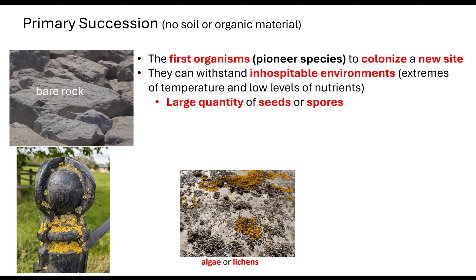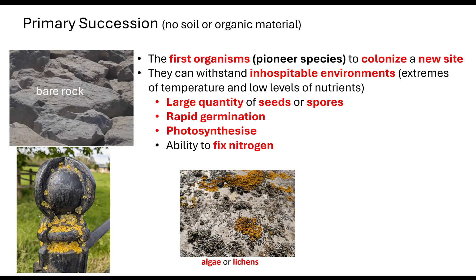If those seeds or spores are blown onto bare rocks, they will start to colonise. They have the ability to do rapid germination, meaning they can start to colonise very quickly. They can also do photosynthesis, fixing carbon dioxide from the atmosphere into organic compounds, and they have the ability to fix nitrogen. The fact that they can survive with only carbon dioxide, light, nitrogen, and very little nutrients makes them ideal organisms for colonising.